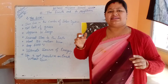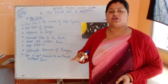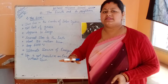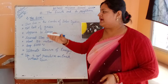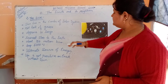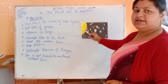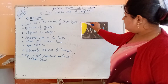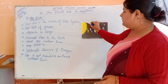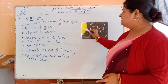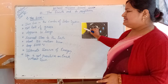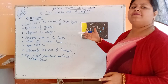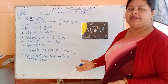Sun is in the center of the solar system. You can see the picture on your screen — this is the sun. It is a hot ball of gases; you can say a ball of fire as well.